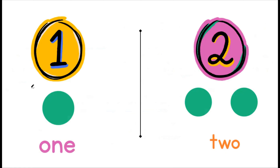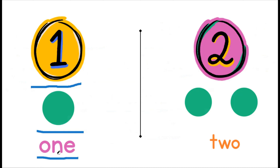One. This is the number one. Here is one dot. O-N-E spells one.